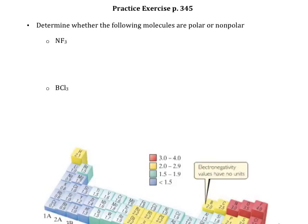Let's go ahead and start by doing the first one: NF3. Just like we always do, we're going to figure out how many valence electrons we have to work with. Nitrogen is bringing us five valence electrons, and we've got three fluorines each bringing us seven, so we've got a total of 26 valence electrons to work with.